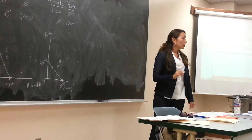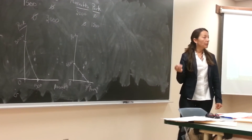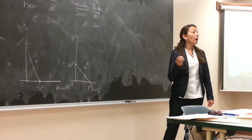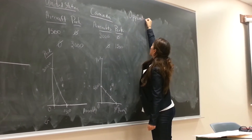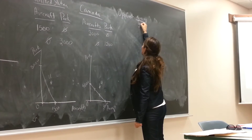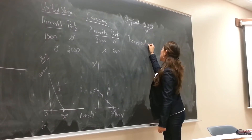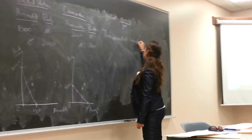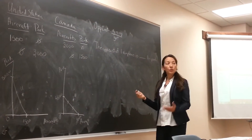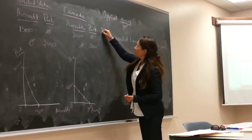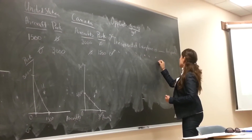Now I want you to figure out which country has the comparative advantage in the production of aircraft and which has the comparative advantage in the production of pork. That means we have to find the opportunity cost of producing these items. Remember the formula for opportunity cost is what you give up over what you get. We express this as: the opportunity cost of one airplane equals X pounds of pork — and we calculate this for both the U.S. and Canada.